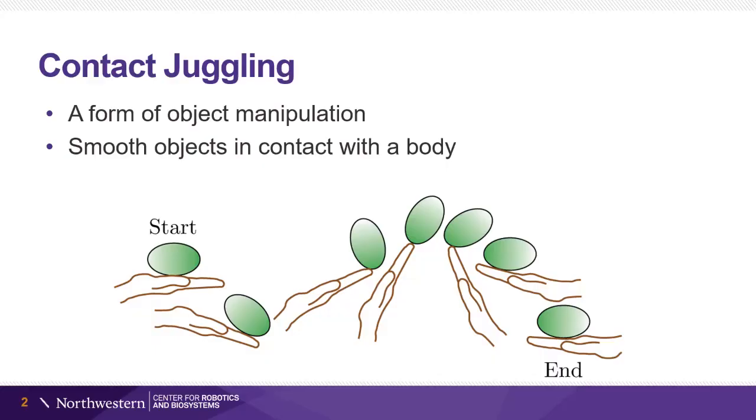Contact juggling is a form of object manipulation that focuses on the movement of smooth objects in contact with a body. An example regrasp is shown in the figure. By accelerating the palm, the green object rolls over the fingertips to the goal state on the back of the hand.